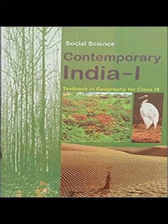The dry deciduous forests are found in areas having rainfall between 100 centimetres and 70 centimetres. These forests are found in the rainier parts of the peninsular plateau and the plains of Bihar and Uttar Pradesh. There are open stretches in which teak, sal, peepal and neem grow. A large part of this region has been cleared for cultivation and some parts are used for grazing. In these forests, the common animals found are lion, tiger, pig, deer and elephant. A huge variety of birds, lizards, snakes and tortoises are also found here.